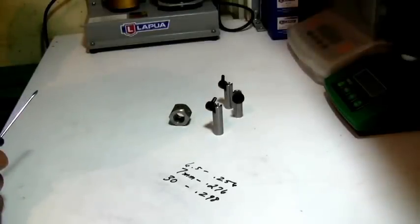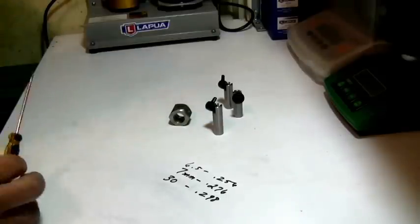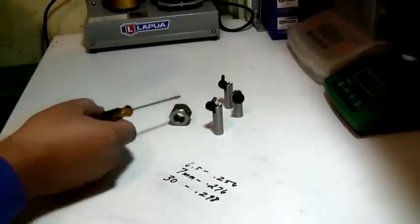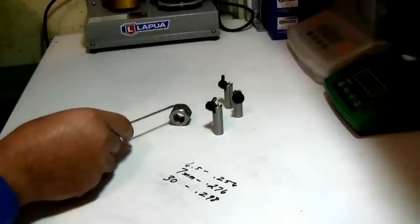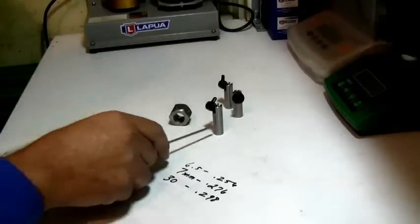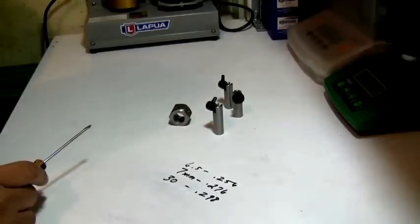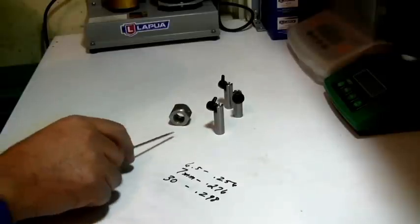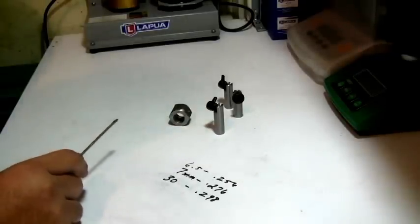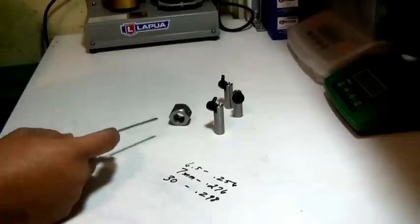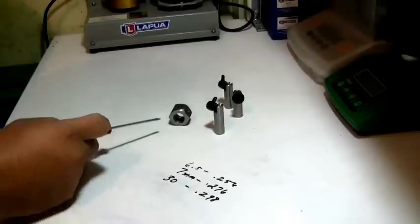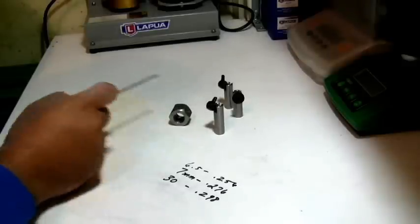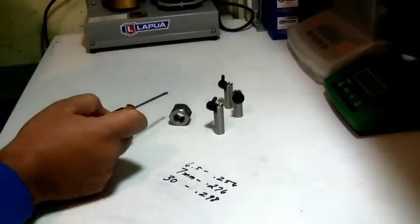So if we have loaded rounds and they're dead nuts within a thousandth with the nut, then we measure with the Bob Green tool. Because the Bob Green tool contacts at a different place, and we talked about the ogive profile. The profiles are not all the same, so from where this nut contacts the bullet ogive to where the comparator, this one, contacts the ogive, there might be a variance.